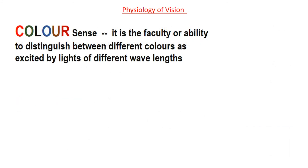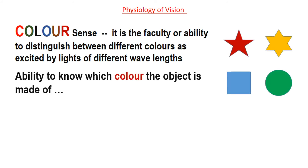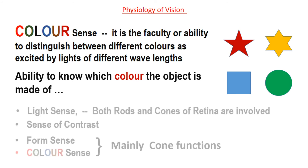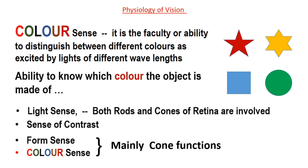And then is color sense. It is the faculty or ability to distinguish between different colors as excited by lights of different wavelengths. Simply put, it's the ability to know which color the object is made of, as you can see in different colored objects. In light sense, both rods and cones of the retina are involved. But form sense and color sense are mainly cone functions.